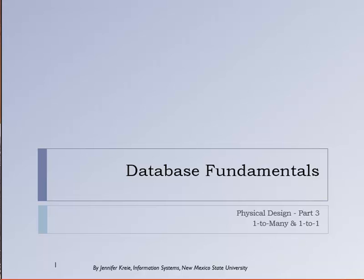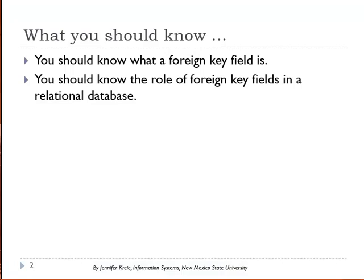This is the seventh in a series of videos about database fundamentals. We're going to look at a one-to-many relationship that's unary, and we'll also look at the one-to-one relationship. Before you watch this video you should have an understanding of what a foreign key field is, which we've talked about in previous videos.